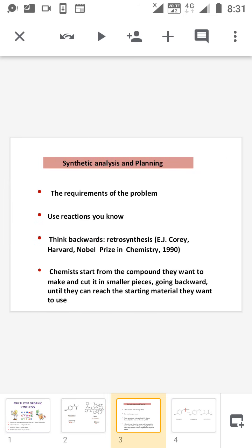Next is synthetic analysis and planning. For every multi-step synthesis there is a target molecule. We have to understand the structure of the target molecule very well. Then find out the possible reactions which are known by us, or otherwise we have to do the retrosynthetic analysis of the target molecule. Retrosynthetic analysis was first introduced by E.J. Corey. He is a scientist at Harvard University and he got the Nobel Prize in Chemistry in 1990.